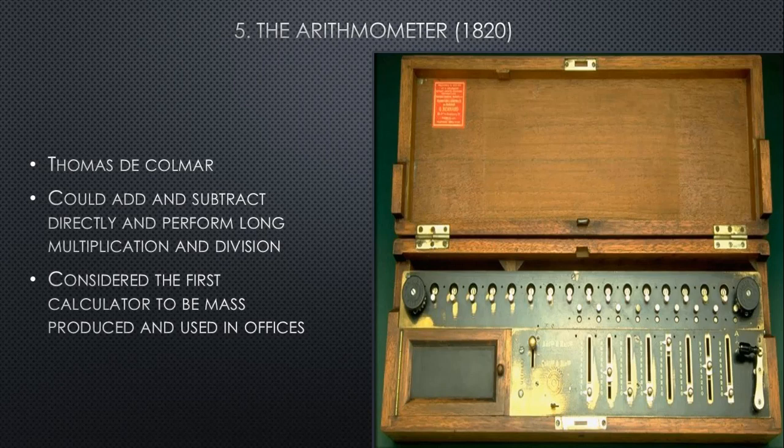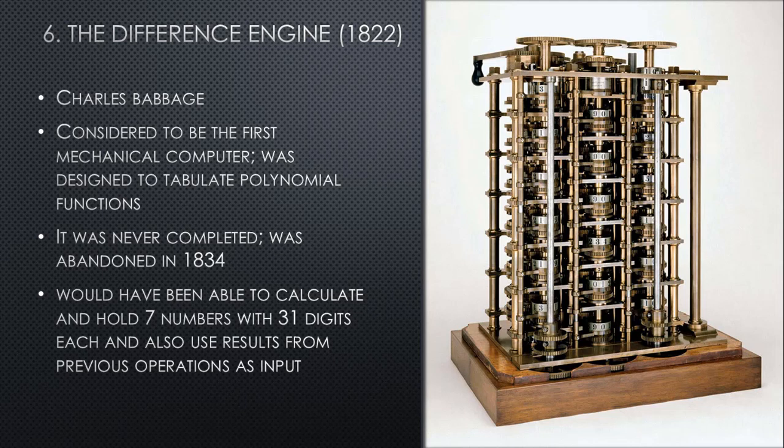The Arithmometer could add and subtract directly and perform long multiplication and division. It is considered the first calculator to be mass produced and used in offices — the first calculator produced in large quantity and then used commercially in offices and probably in homes.